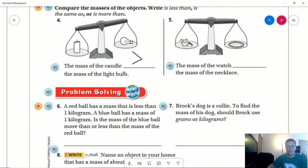Number six. A red ball has a mass of less than one kilogram. A blue ball has a mass of one kilogram. Is the mass of the blue ball more or less than the mass of the red ball? So if we have less than a kilogram and then we have exactly a kilogram, the blue is going to be greater than the mass for red.